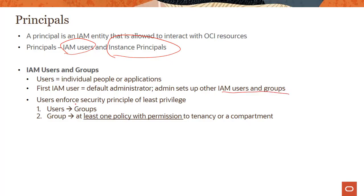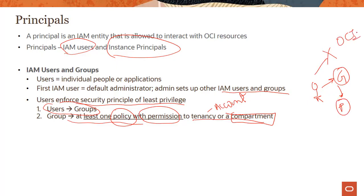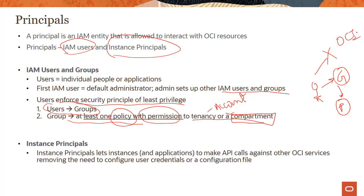In OCI, users enforce the security principle of least privilege. Users have to belong to groups, and then groups need to have a policy which grants some kind of permission to either a whole account (your tenancy) or a compartment within that account. If these two conditions are not met, users have no access to any OCI resources.